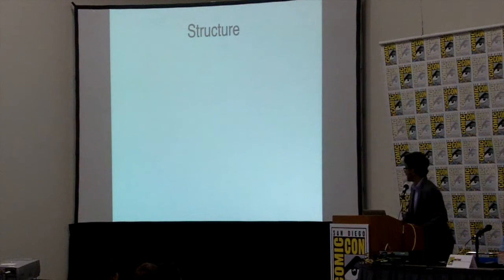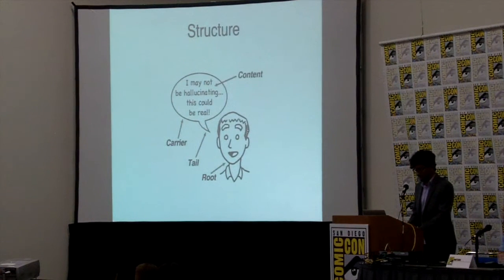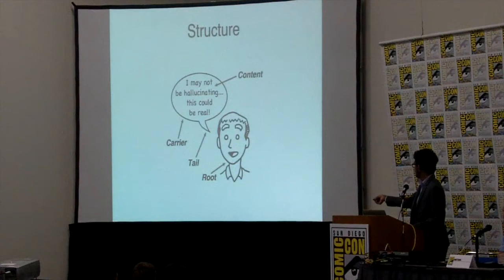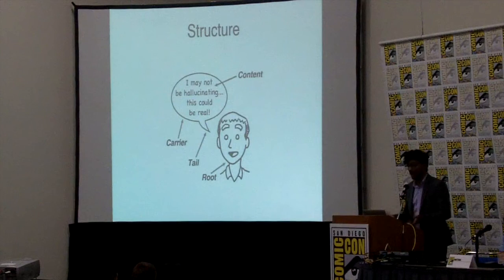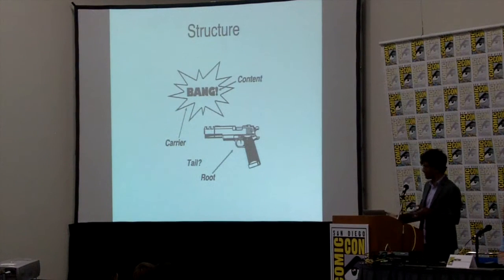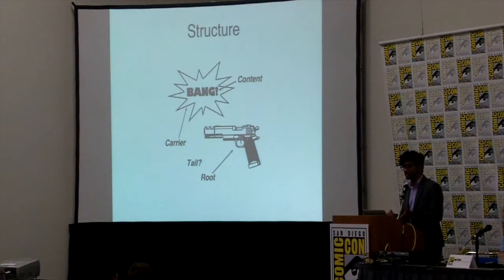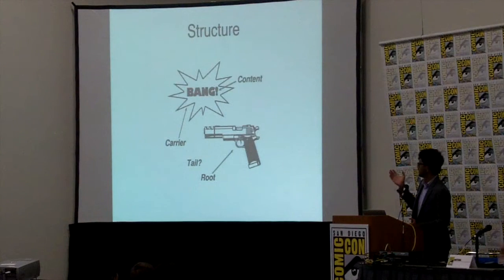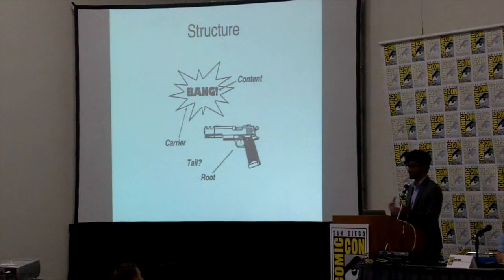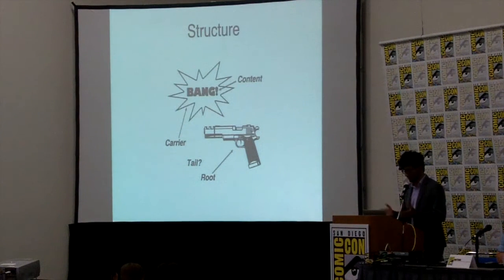Now that we've talked about the semantic properties of sound effects, let's talk about the structure. The structure of sound effects is similar to that of regular speech vocals. Regular speech bubbles are produced by a root and connected to it by a tail. The carrier refers to the shape of the bubble itself, and the content is what's inside. Sound effects are pretty similar — you still have a root, carrier, and content. The only difference is there may or may not be a depicted tail, but you can usually infer what root is producing the sound effect.